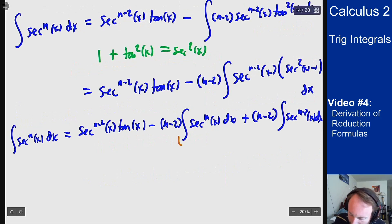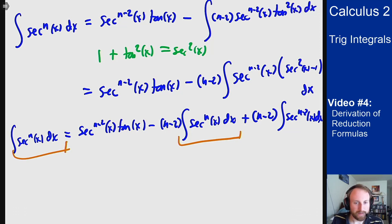I then see that this integral matches this one. I can add that over giving me an n minus 1 on that side, and then I can divide through by n minus 1 to give me my final formula here.